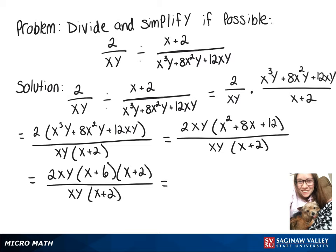Now to simplify, we can rewrite this as xy over xy times x plus 2 over x plus 2 times 2 times x plus 6. And now these parts will cancel out and that leaves us with 2 times x plus 6, so when we distribute the 2, we'll get 2x plus 12.